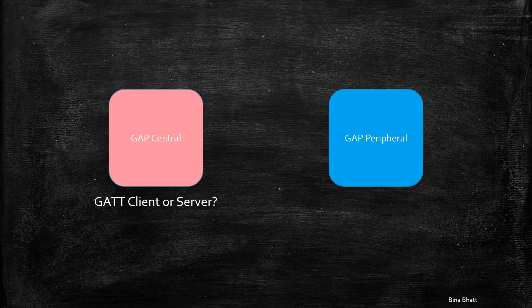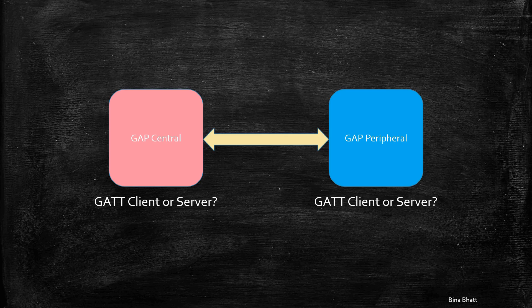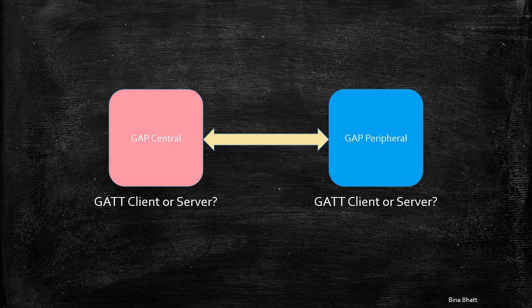The question is: is it compulsory for the GAP central to be a GATT client and GAP peripheral to be a GATT server? Or are the roles interchangeable? That is, is it possible for a GAP central to be a GATT server and GAP peripheral to be a GATT client?